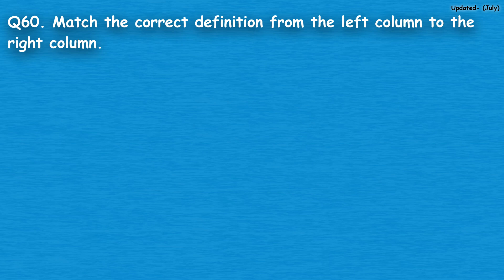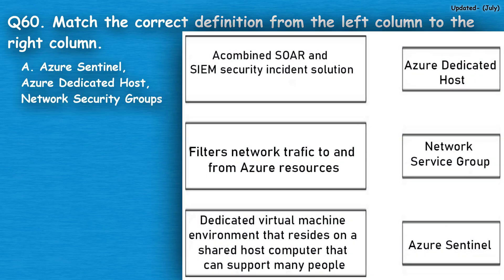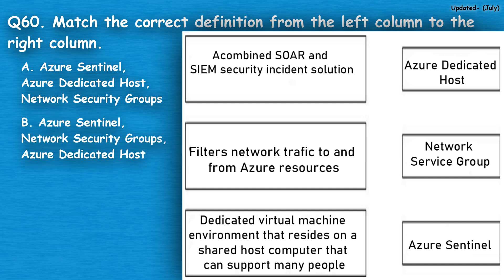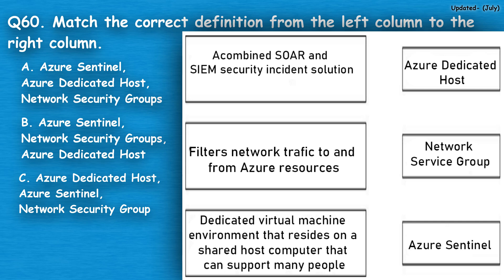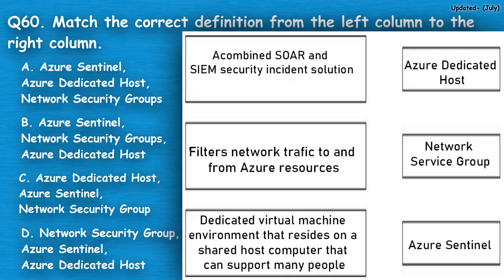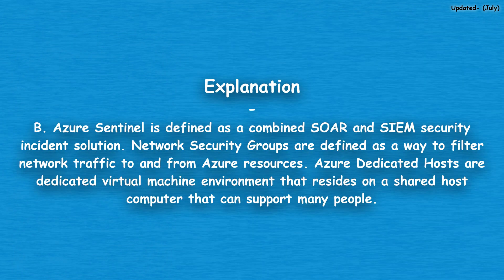Question number 60: Match the correct definition from the left column to the right column. Option A: Azure Sentinel, Azure Dedicated Host, Network Security Groups. Option B: Azure Sentinel, Network Security Groups, Azure Dedicated Host. Option C: Azure Dedicated Host, Azure Sentinel, Network Security Group. Option D: Network Security Group, Azure Sentinel, Azure Dedicated Host. The correct answer is option B. Azure Sentinel is a combined SOAR and SIEM security incident solution. Network Security Groups filter network traffic to and from Azure resources. Azure Dedicated Hosts are dedicated virtual machine environments residing on a shared host computer.